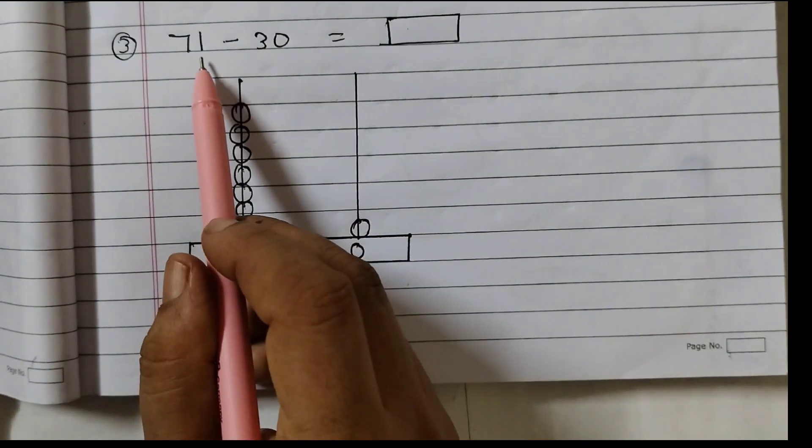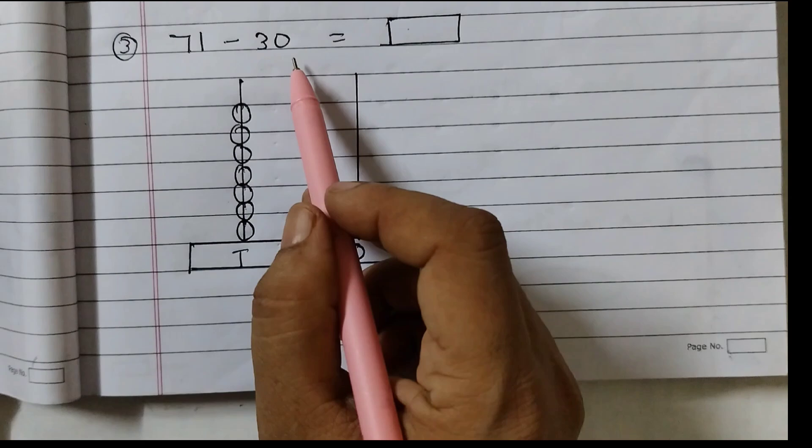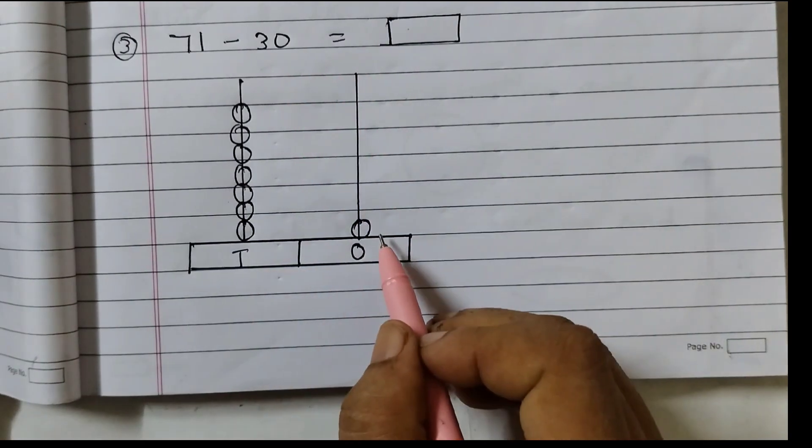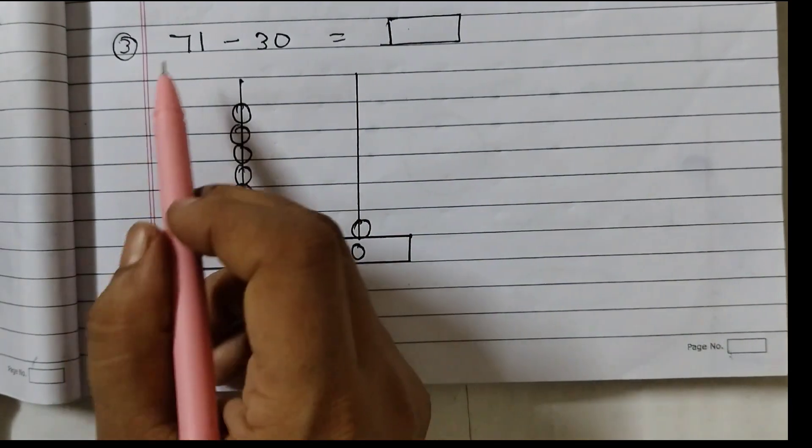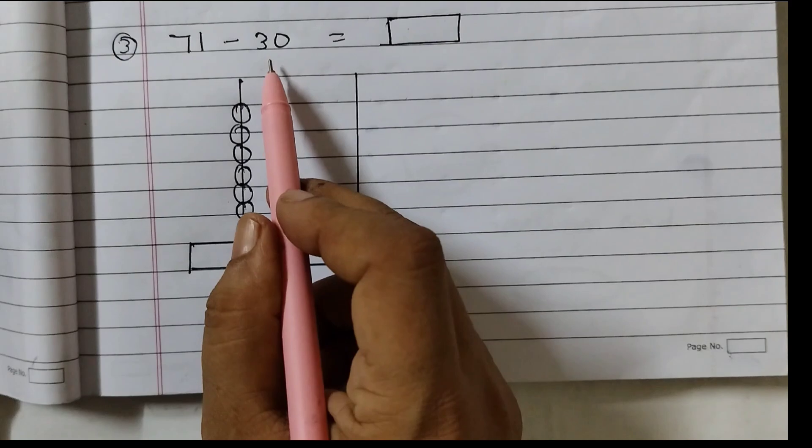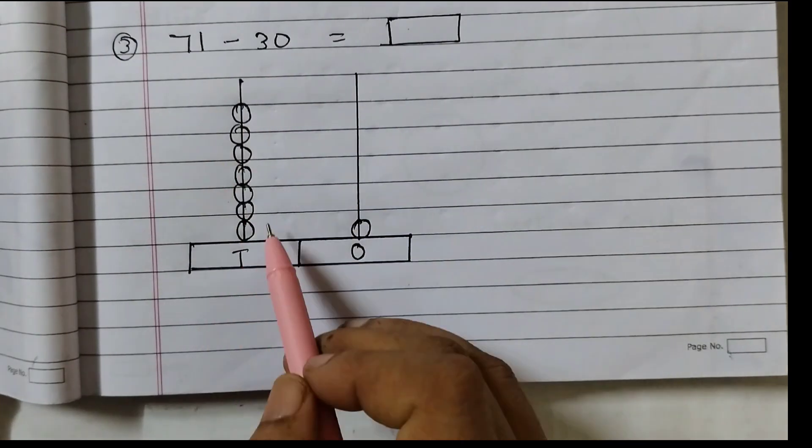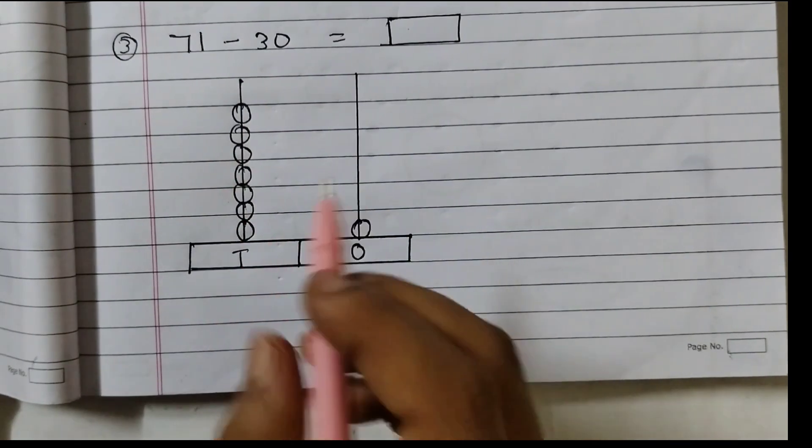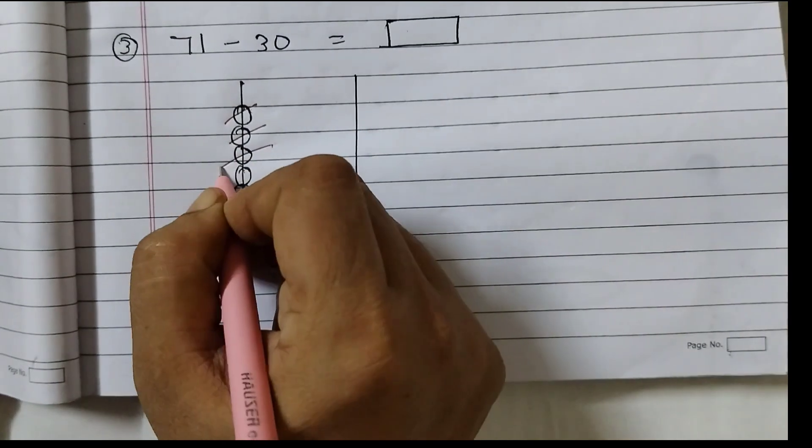Now we will do the subtraction. 1 one minus 0 ones. That is equal to 1. So this will remain as it is. 7 tens minus 3 tens. So out of these 7 beads cancel 3 beads. 1, 2, 3.